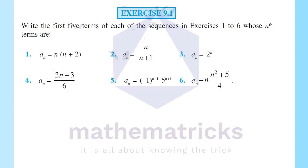Write the first 5 terms of each of the sequences in Exercises 1 to 6 whose nth terms are given. First one: an is equal to n into (n plus 2). That is the nth term. Let's write the first 5 terms. When n equals 1: a1 is equal to 1 into (1 plus 2), that is equal to 1 into 3. A1 is equal to 3.